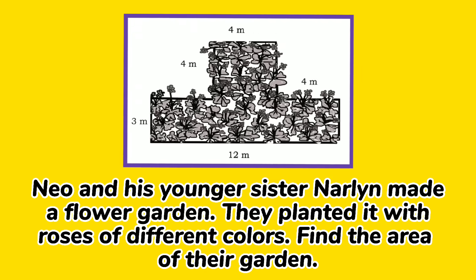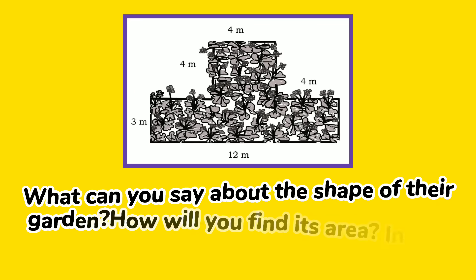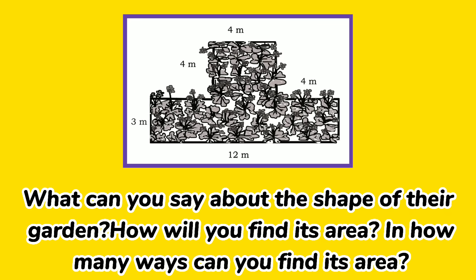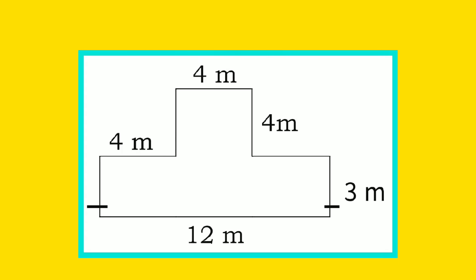Let's have this problem. Neo and his younger sister, Narlene, made a flower garden. They planted it with roses of different colors. Find the area of their garden. What can you say about the shape of their garden? How will you find its area? And how many ways can you find its area? Let's take a look at the shape of their garden — how can you break it up into rectangles and or squares?